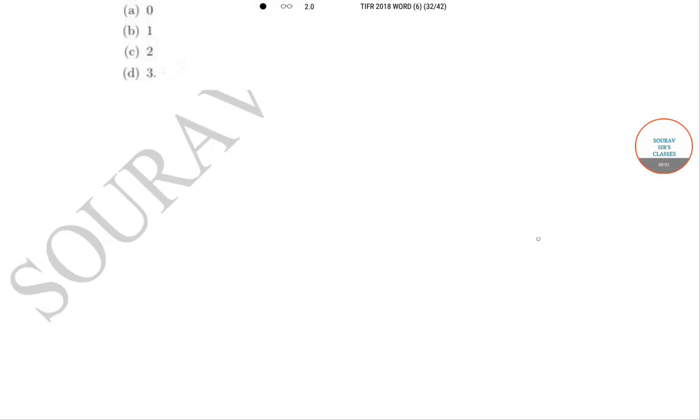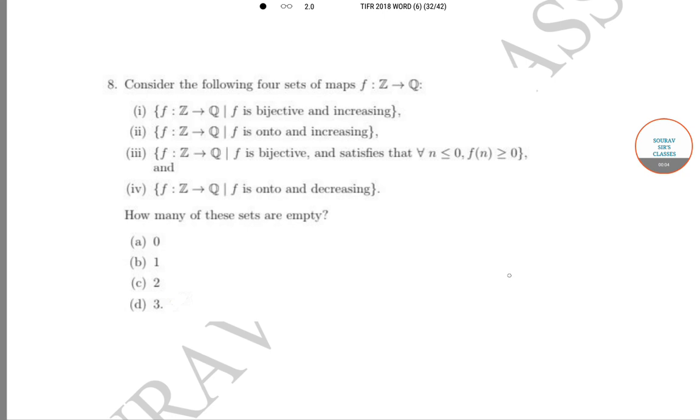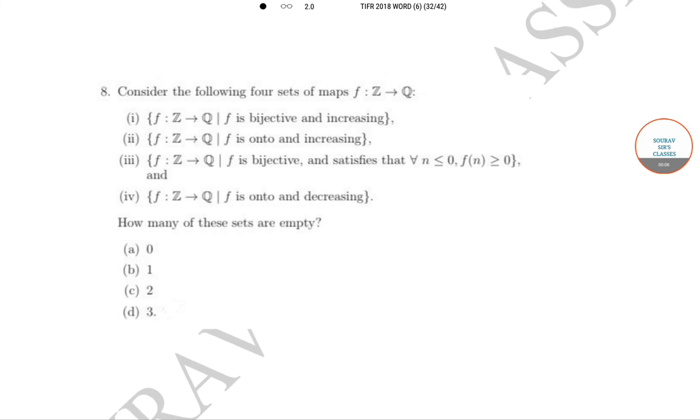Hello students, welcome to Suraj's classes. The question is: consider the following four sets of maps F: Z → Q. Option 1: F: Z → Q such that F is bijective and increasing. Option 2: the mapping F is onto and increasing.